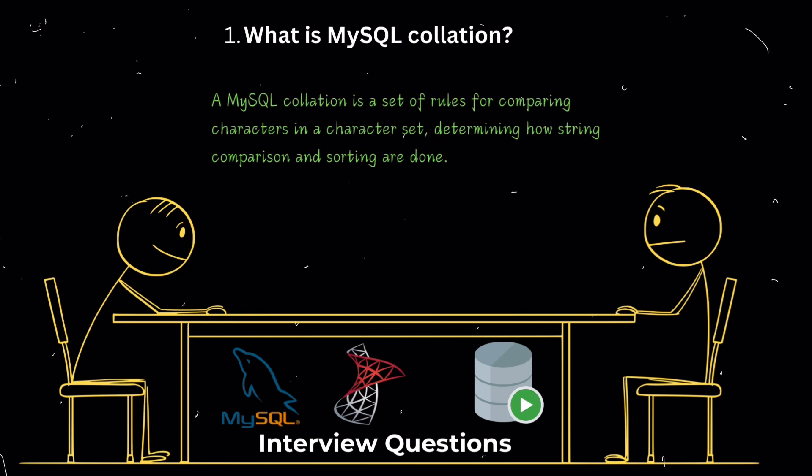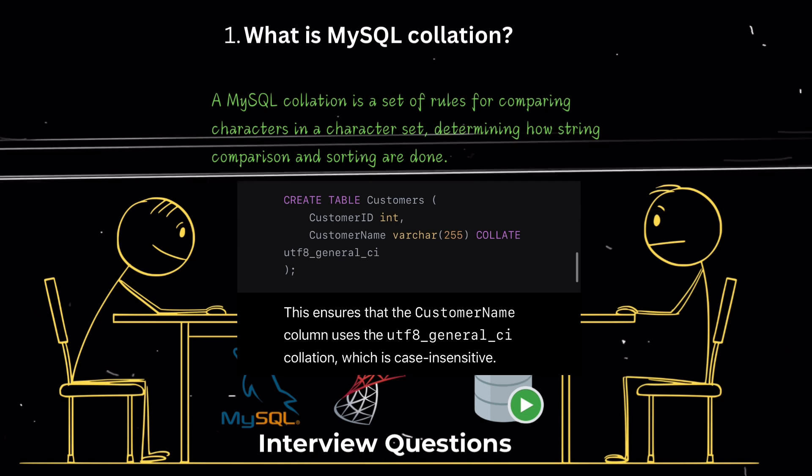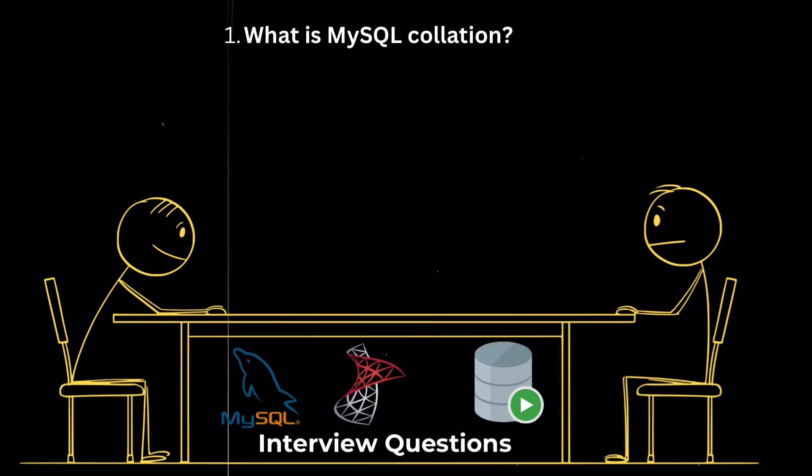What is MySQL collation? A MySQL collation is a set of rules used to compare characters in a particular character set. Each character set can have multiple collations, but only one default collation. Collations determine how string comparison and sorting are done.